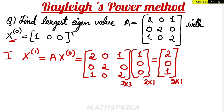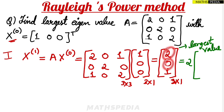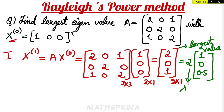After getting the result [2, 0, 1], a very important step is to take the largest value as a common factor. The largest value here is 2, so we factor out 2: we get 2 × [1, 0, 0.5]. The value factored out — 2 — is our eigenvalue estimate, which we can call λ^1.